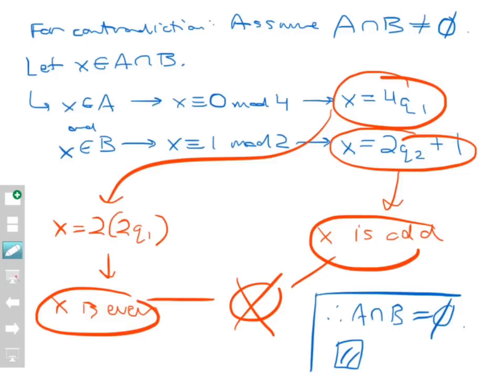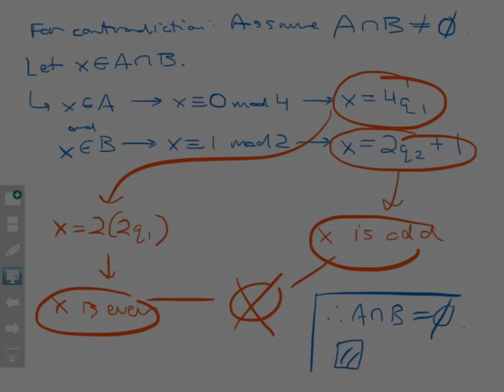So that's one strategy for proving that two sets are disjoint: suppose they aren't disjoint and pick an element out of their intersection. Use the criteria defining A and B to derive a contradiction, which forces the intersection to be empty. Thanks for watching.